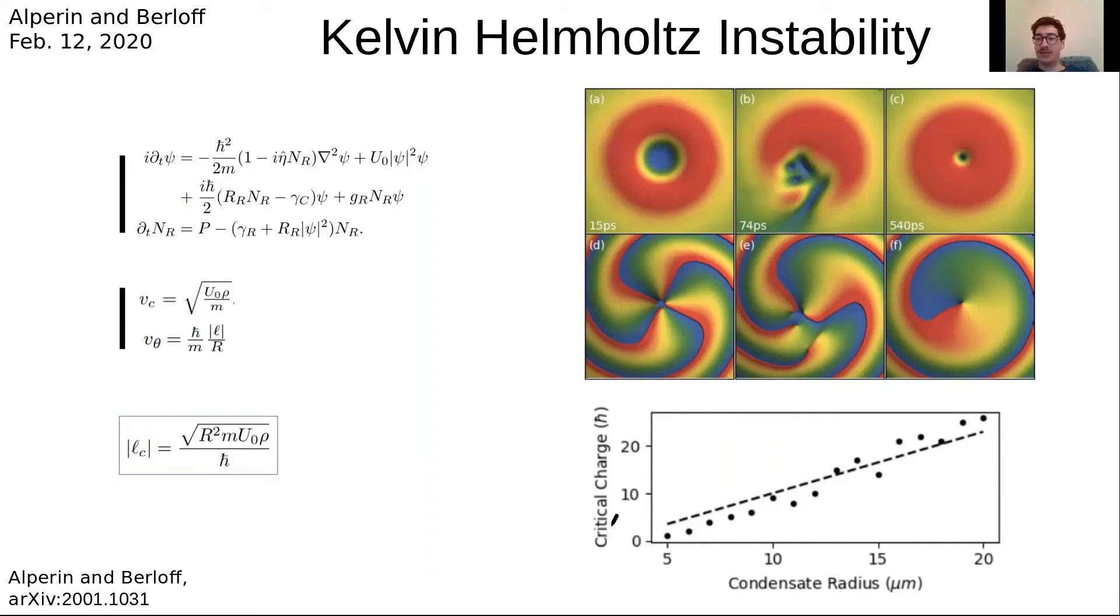To establish the limit on the multiplicity of the vorticity, the limit is set by the counterflow velocity which is supported between the condensate and the reservoir just outside of it at the pump spot. This counterflow instability is known as the Kelvin-Helmholtz instability. This is seen in both quantum and classical systems, but in this context, this manifests as the nucleation of vortices when the counterflow velocity exceeds the local speed of sound, given here. Now we know that at a certain radius, the rotational velocity of the condensate at that radius is given here, so we can quite easily determine the maximum charge for some given radius.